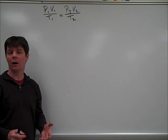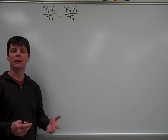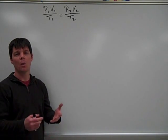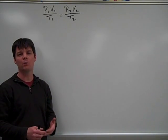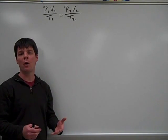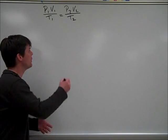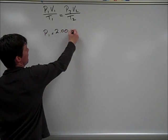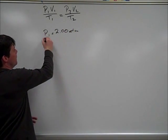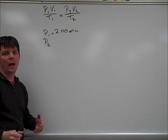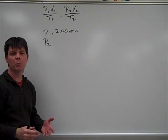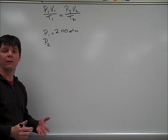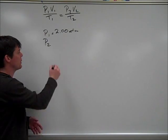Let's begin by identifying our variables. Let's look at the pressure variables first. We know that the starting pressure is 2.00 atmospheres, and then we see that the pressure is going to be raised to 2.50 atmospheres.